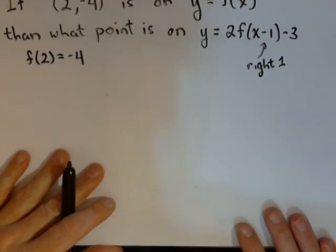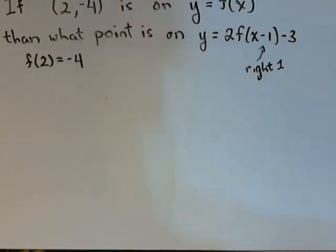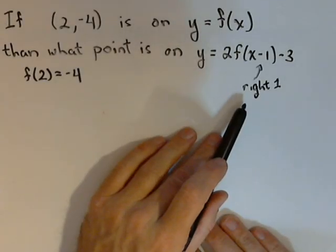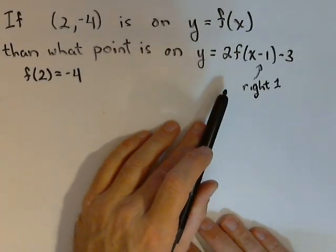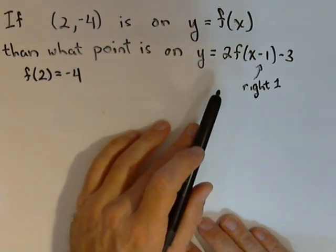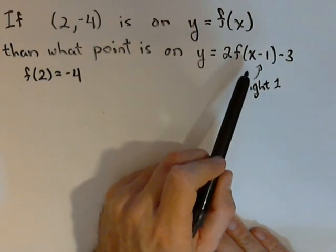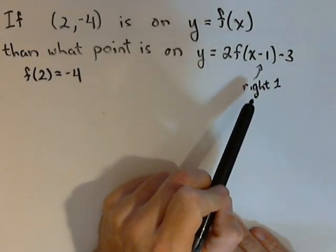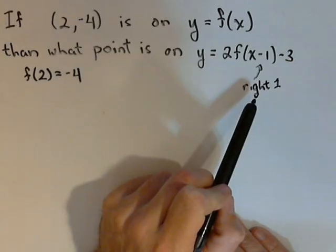I have another video that explains why exactly that is. So we know we're going right 1 unit. Now we want to see if there's any other horizontal shifts, translations, or reflections. What we see is there's nothing else being done on the input. So the only thing done on the input is it's going to be moved right 1.